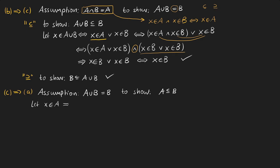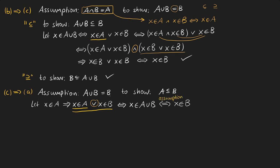If we know that X is in A, we can imply that X is in A or X is in B, because X is in A is a true statement and therefore the statement as a whole is also true since it is joined with a logical OR. By definition this is nothing else than X being in the union of A and B. Because the assumption states that the union of A and B is the same as B, we know that if X is in the union of A and B, it also has to be in B.